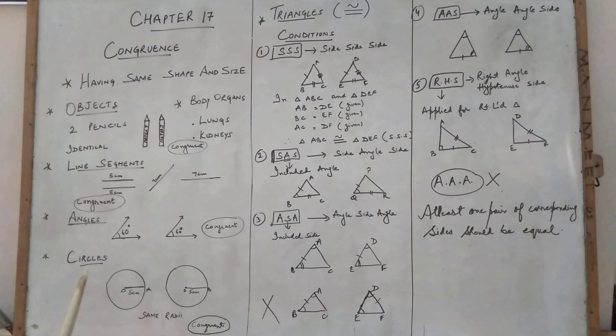Now if we talk about circles, I have taken a circle with radius 5 cm, drawn a circle. Again 5 cm, drawn a circle. Both circles are having the same radii, so these are congruent circles. I have told you these examples so that you can understand what is congruency.